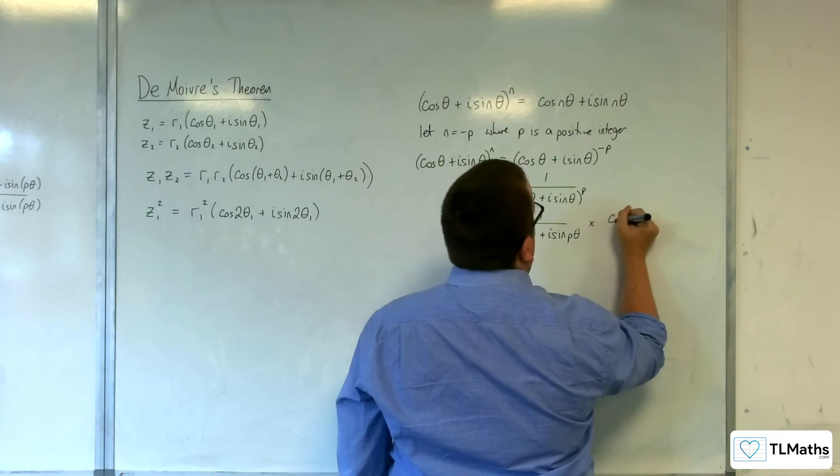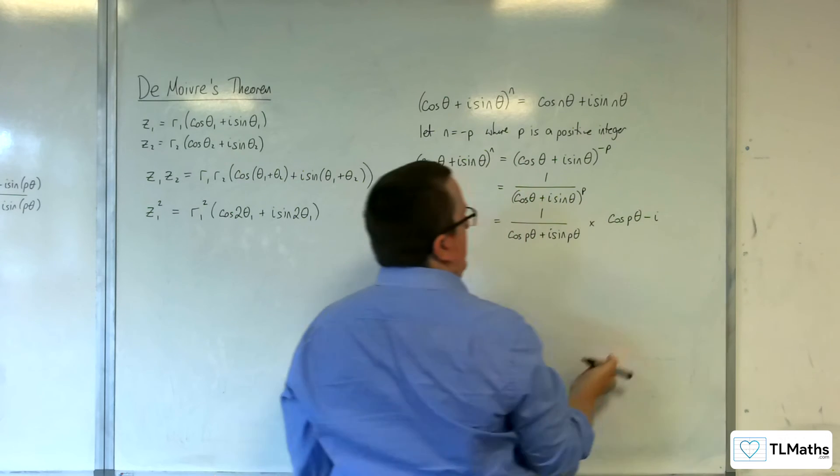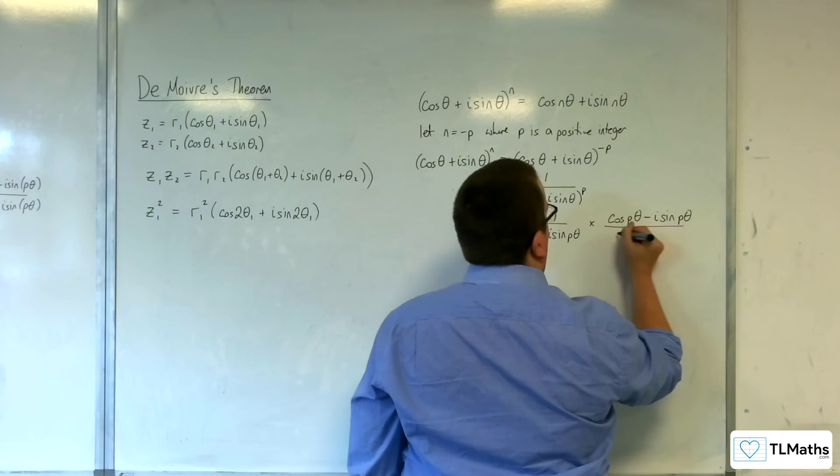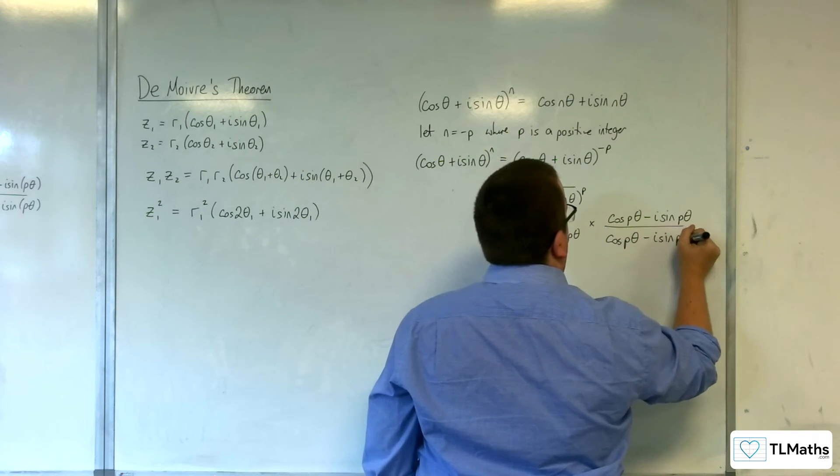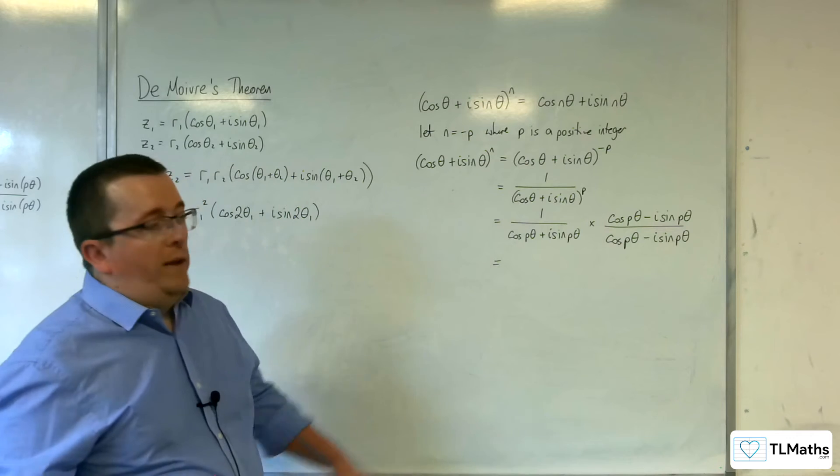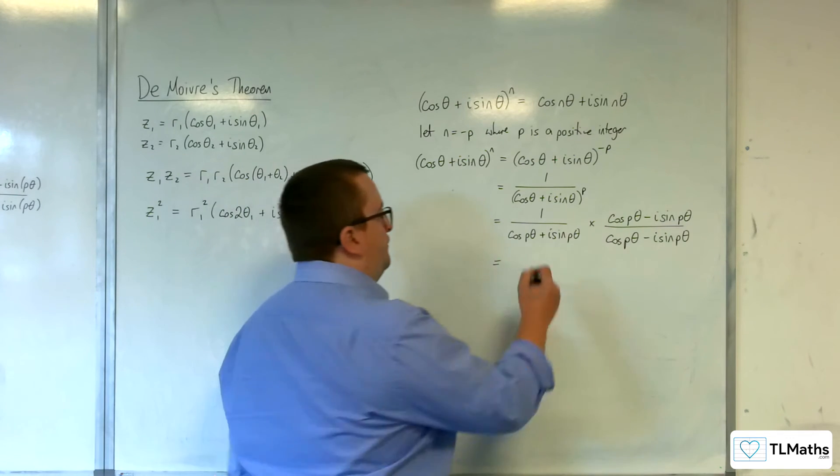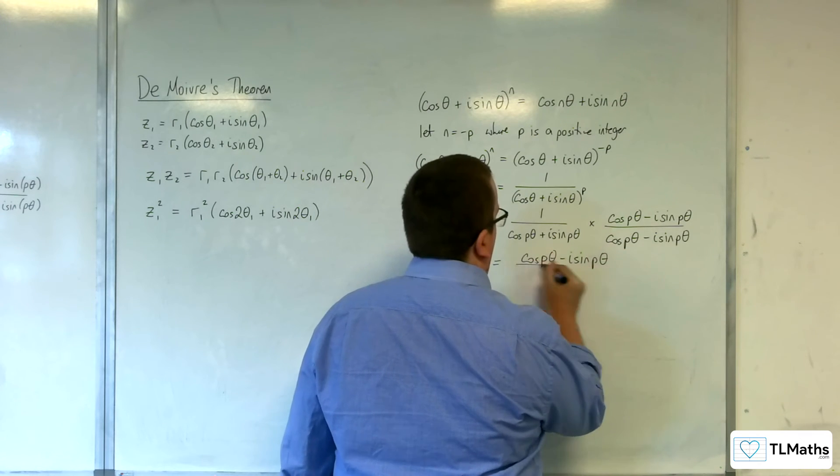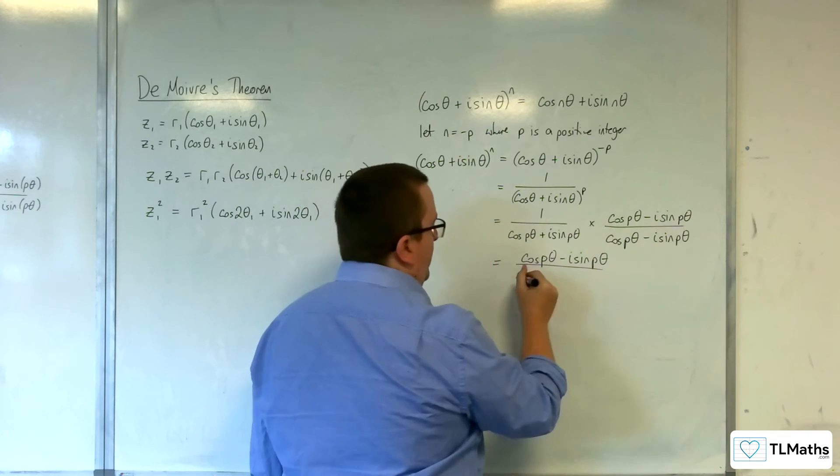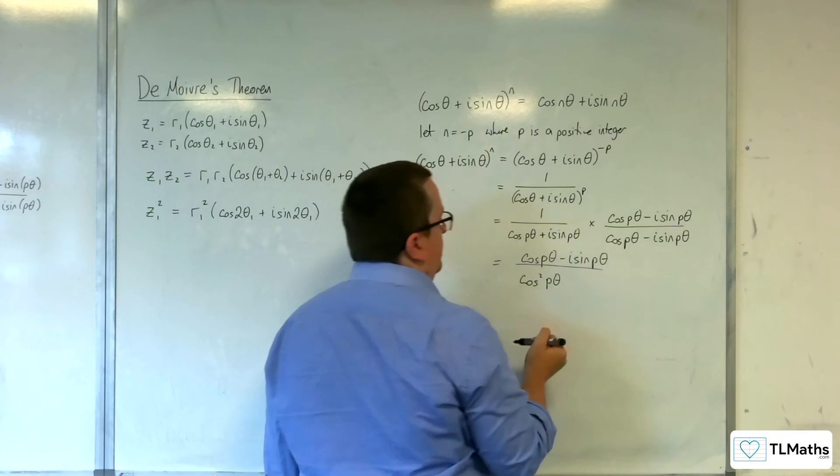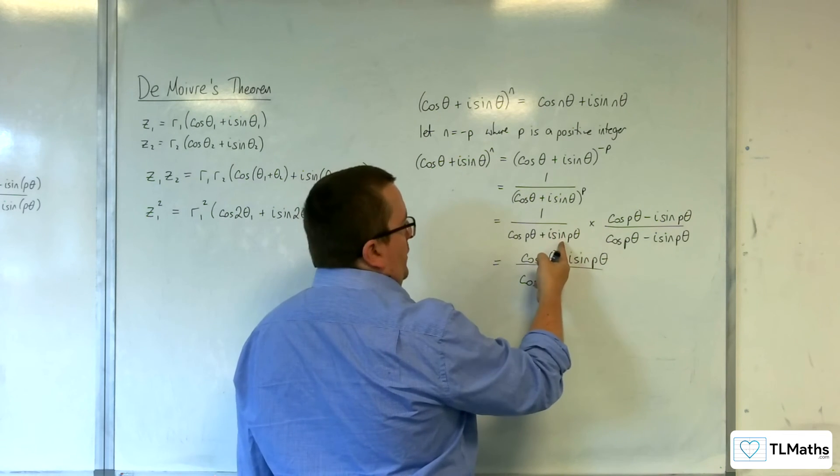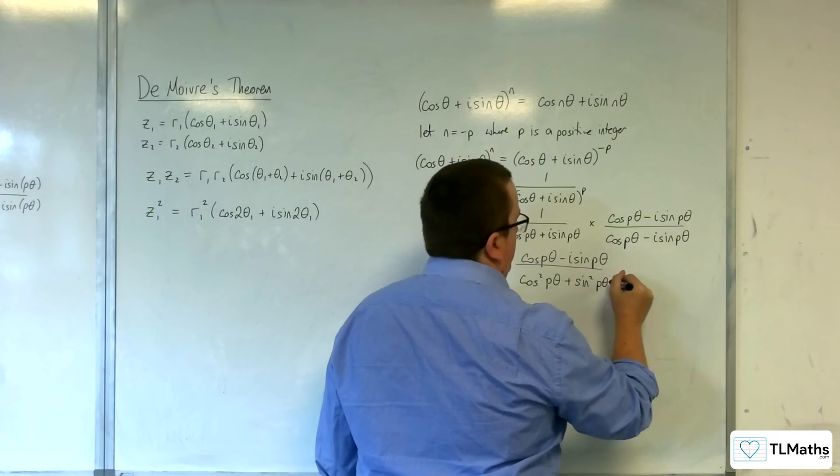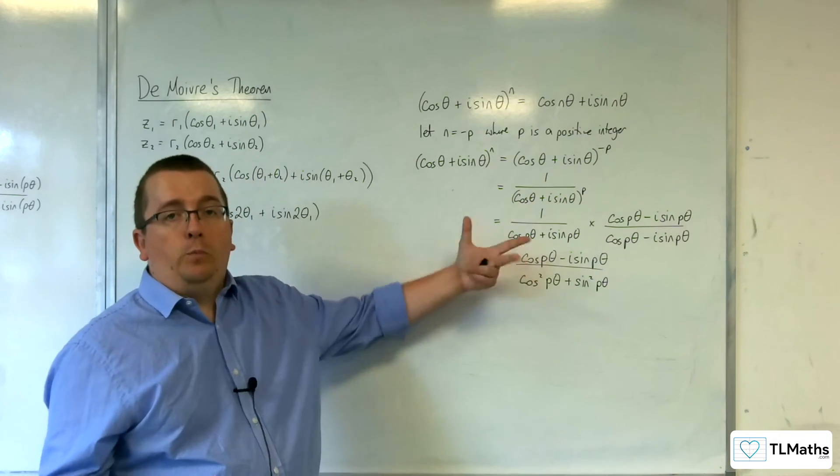Now, if you multiply this top and bottom, just as we would have done by multiplying top and bottom by the complex conjugate of the denominator, like so, well, your numerator is just going to be cosine P theta take away i sine of P theta. In the denominator, you're going to get cosine P theta times cosine P theta, so cosine squared of P theta. The middle terms are going to cancel. And you're going to get i sine P theta times minus i sine P theta, which is plus sine squared P theta. So in the denominator, you've got sine squared plus cosine squared, which, of course, is 1.